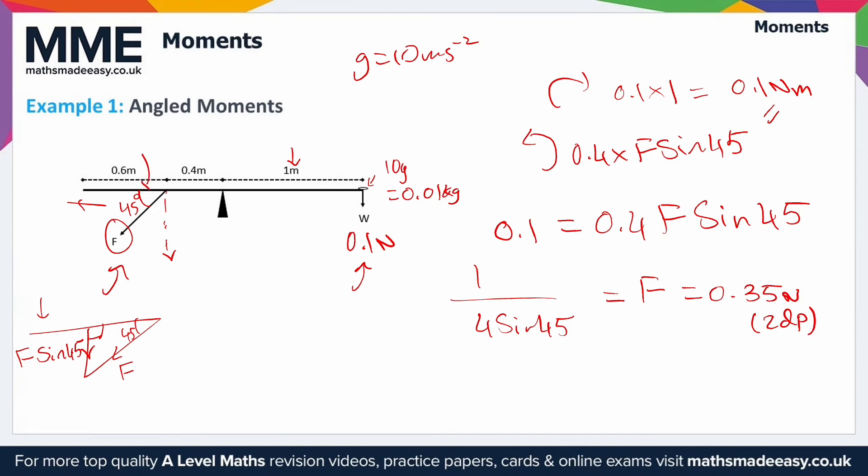Now obviously I could change this angle here to whatever I like. I could make it 60 degrees which means more of it is being applied downwards because of course the line of action would be somewhere more here.